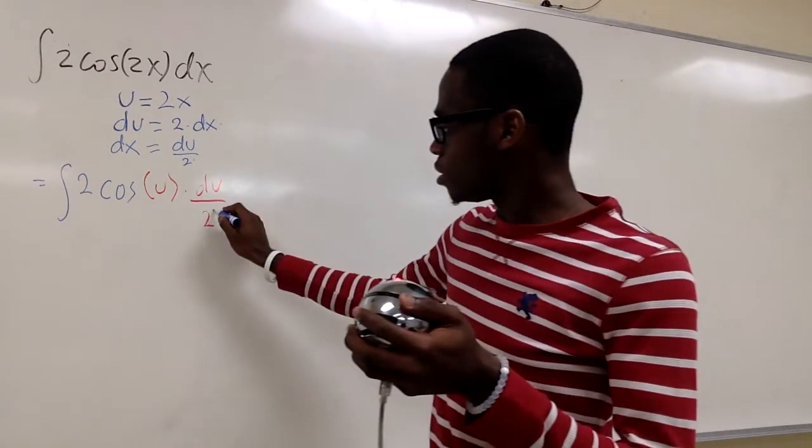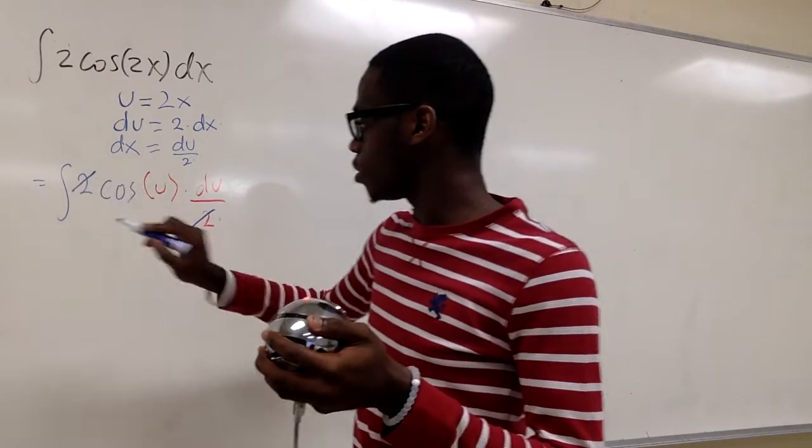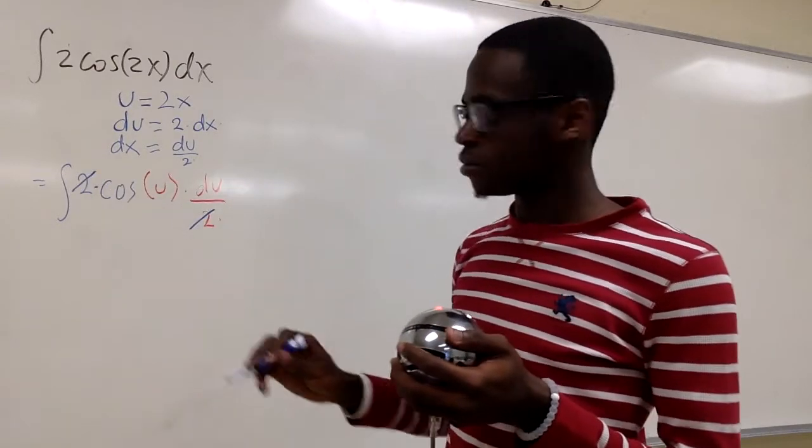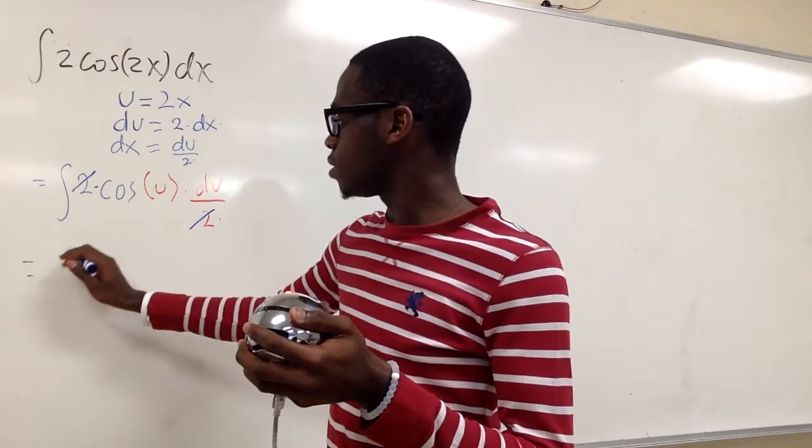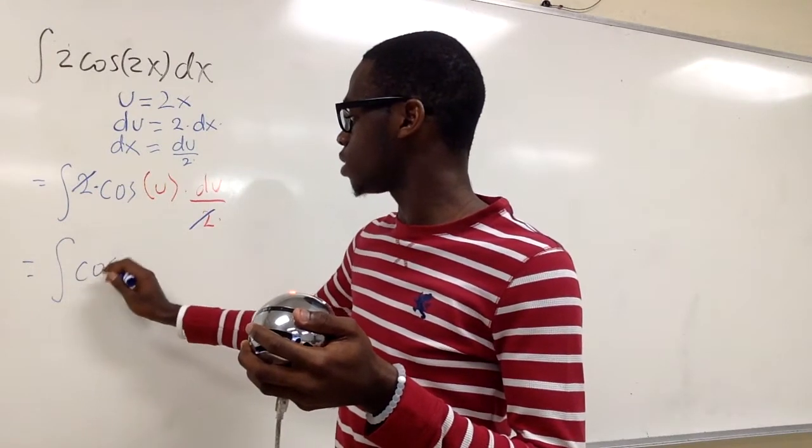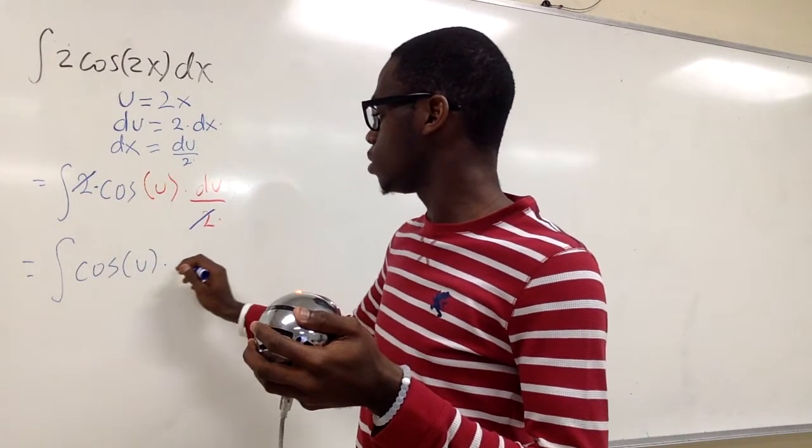And notice how this cancels out with each other because everything's multiplying. So we're going to have the integral of cosine u times du.